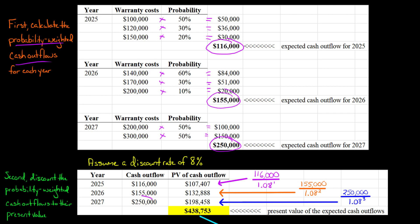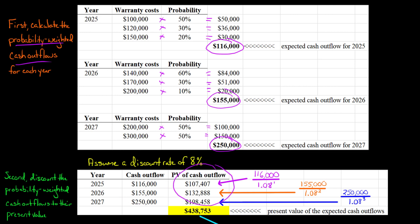Finally for 2027, the $250,000 cash outflow is discounted by dividing by (1 + 0.08)^3, since it's three periods into the future. Here are the cash outflows we calculated, and here are the present values of each cash outflow. We add these three present values together, which gives us $438,753.